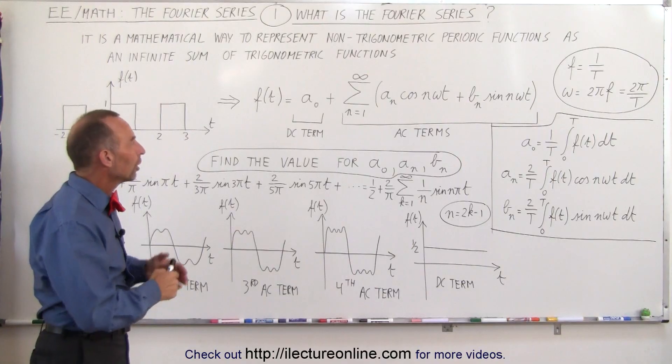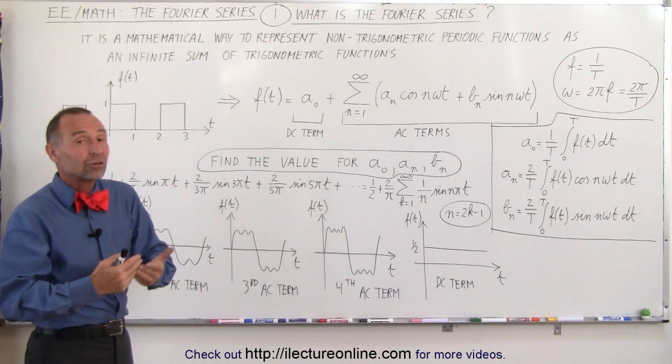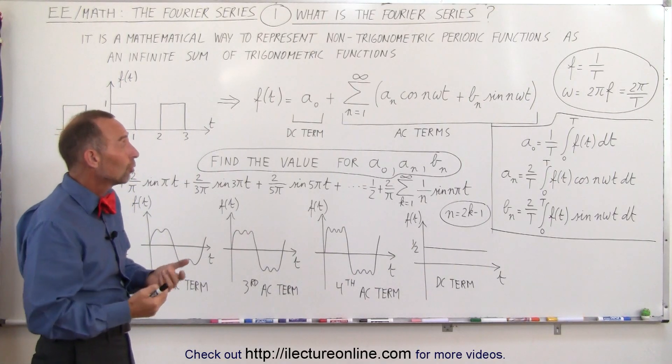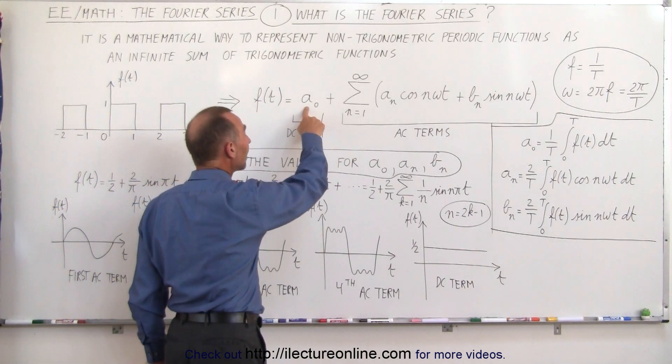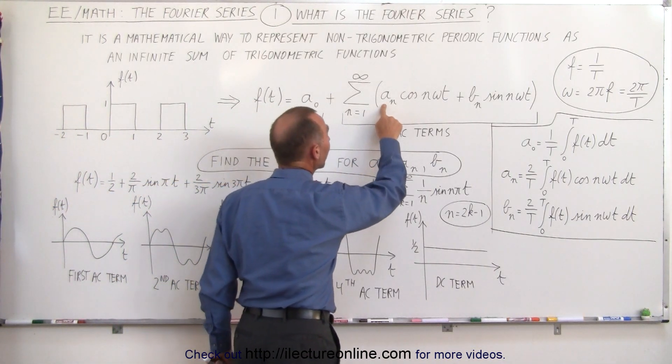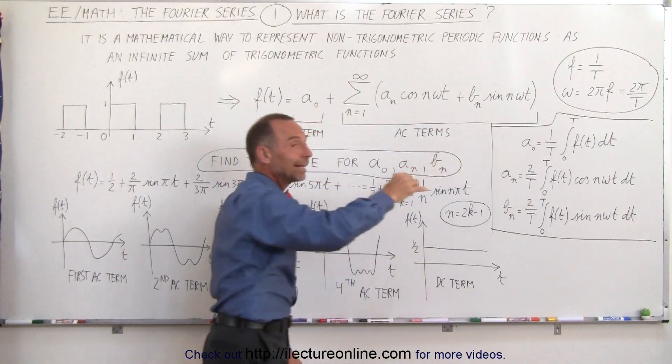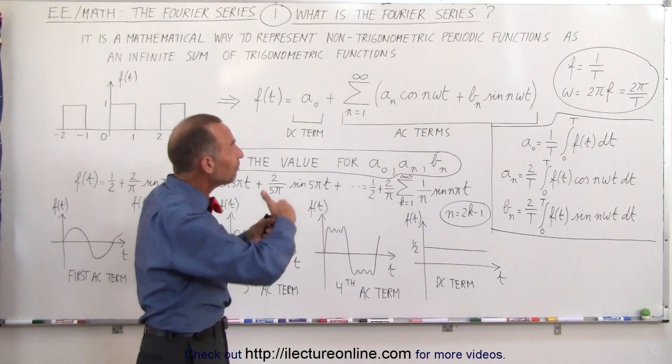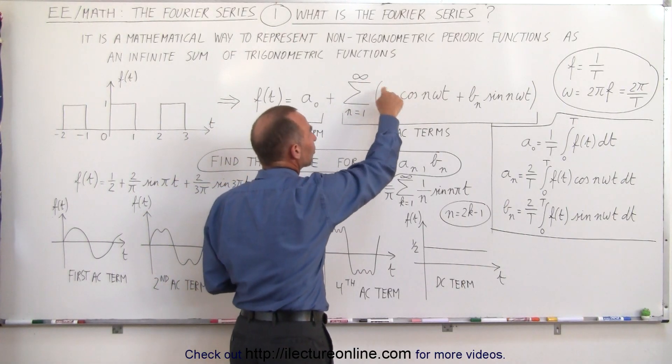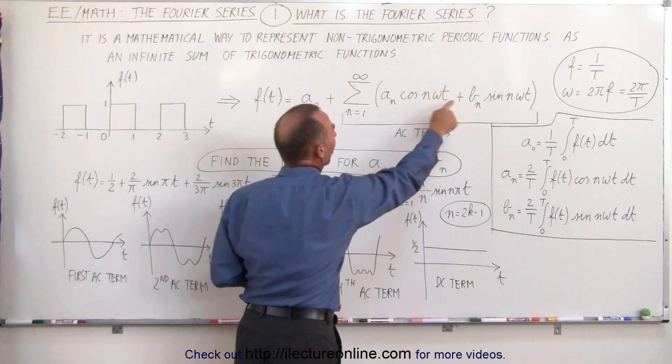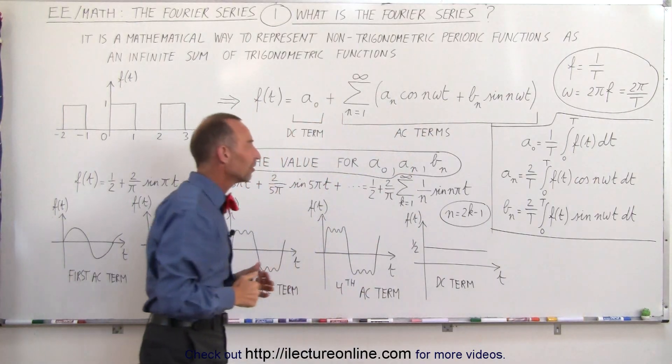Now to solve for an equation, a set of equations like that, to solve for the trigonometric functions, it comes down to finding the DC term a sub not and to find a sub n and b sub n. Remember that a sub n and b sub n are an infinite number of constants from n equals 1 to infinity, but we typically will find some sort of representation of these two sets of constants.